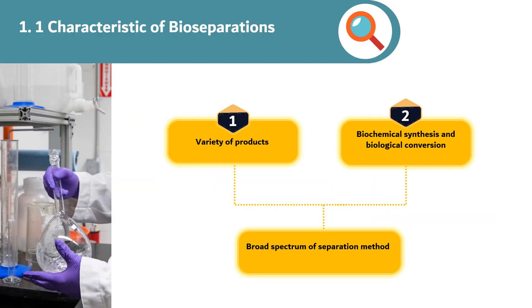There are two major considerations in the downstream process. First, there is a tremendous variety of products that can be produced. Second, not all products are exclusively made biochemically, but also partially biologically converted. This diversity of products spawns the broad spectrum of separation methods used in the downstream process.